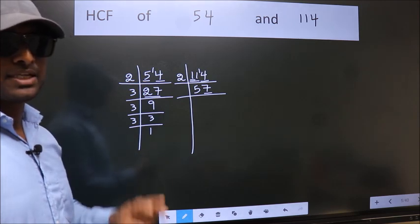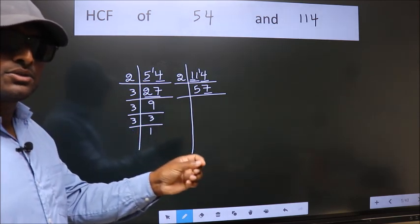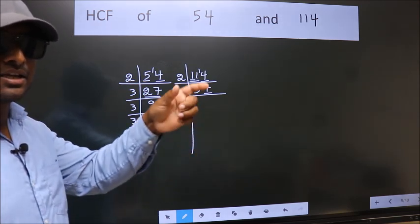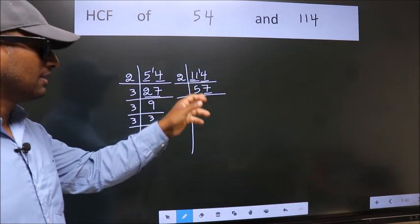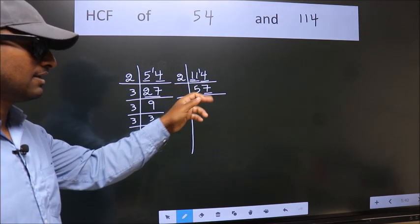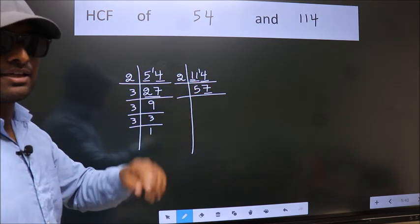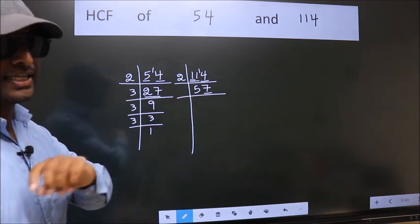Next prime number 3. To check divisibility by 3, for that we add the digits. 5 plus 7, we get 12. Is 12 divisible by 3? Yes.